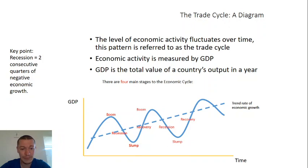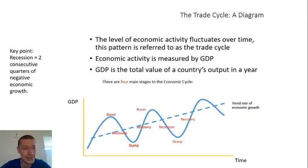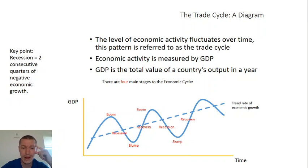The wavy line is what actually happens, and we've got four stages going from the left: boom, recession, slump, and recovery. It's a cycle like a bicycle — it just goes round and round in circles. When you get to a boom, it's inevitable that you're going to be in a recession. Recession is defined as two quarters of negative economic growth — that's six months. And we are, of course, in a coronavirus recession right now.